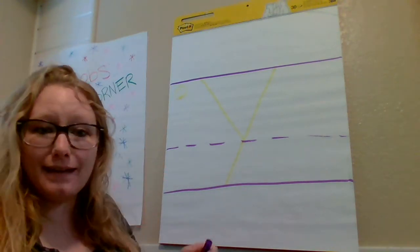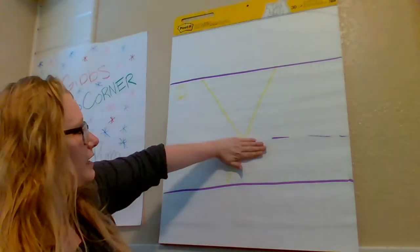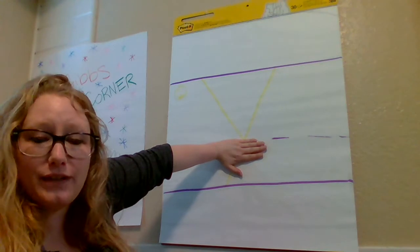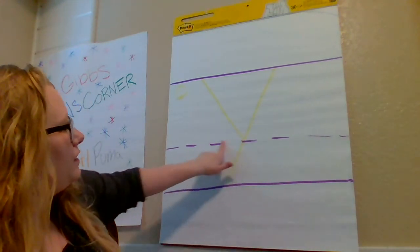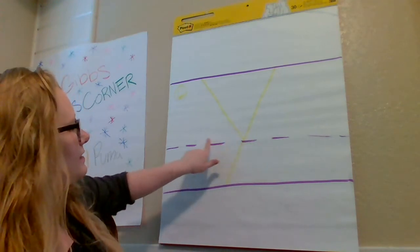So with this letter it does look like if I cover this up it does look like the letter V, doesn't it? But it has a line down below this little dot. This is the middle.